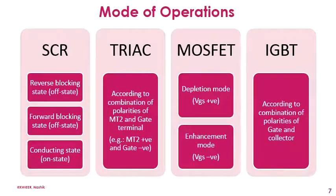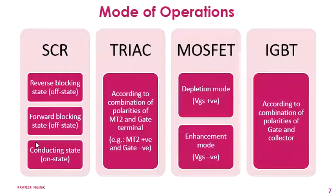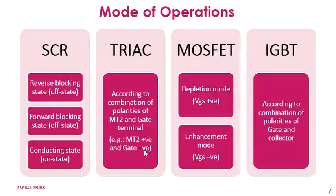Now we will look at modes of operation. SCR operates in three different modes: reverse blocking state, forward blocking state, and conduction state. Current flows through the SCR only in the conduction state — that is its ON state. In the reverse or forward blocking states, the SCR does not conduct. In the case of TRIAC, according to the combination of polarities given to MT2 and gate — positive/negative, negative/positive, both positive, or both negative — there are four modes of operation.